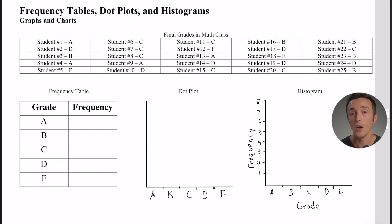Okay, so let's say you have a set of information or data. In this case, it looks like this is the final grades in a math class. Student number one got an A, student number two got a D, student number three got a B, and so on. That type of information you can actually display a variety of ways. We're going to show three of them and show how the same data can be represented three different ways.